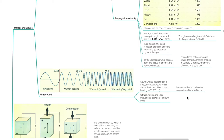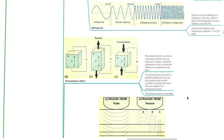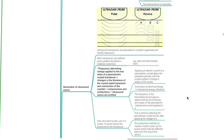Ultrasound imaging uses frequencies between 1 and 20 megahertz. The piezoelectric effect is the phenomenon by which a mechanical stress may be induced in certain crystalline substances when a potential difference is applied across them. It is also the phenomenon by which a potential difference may be produced across certain crystalline substances when they are subject to a mechanical stress. This phenomenon is reversible. Ultrasound transducers use piezoelectric crystals to generate and receive ultrasound. Most transducers use artificial polycrystalline ferroelectric materials or ceramics, such as lead zirconate titanate.